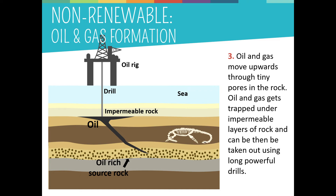Some oil and natural gas manages to get all the way up to the surface and escape through vents into the atmosphere. Other oil and natural gas deposits get trapped under impermeable layers of rock or clay. These trapped deposits are where we find oil and natural gas today, and they are extracted by using long powerful drills.